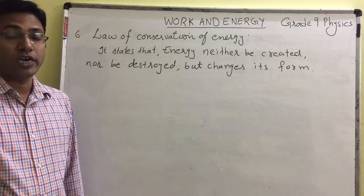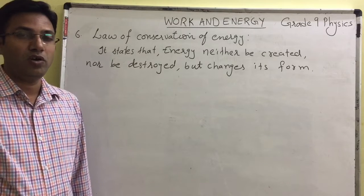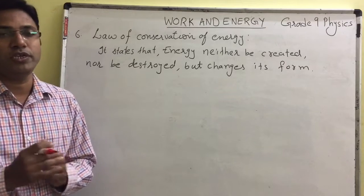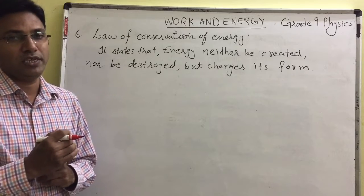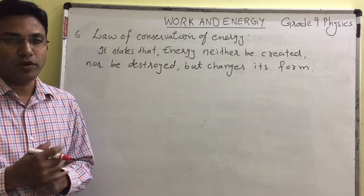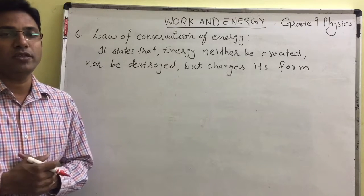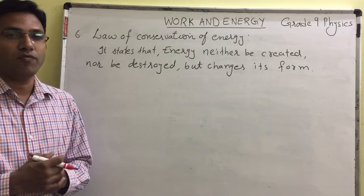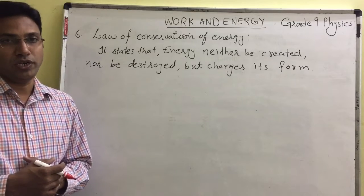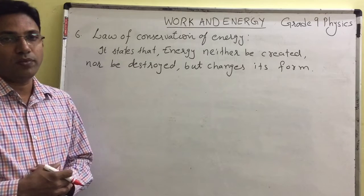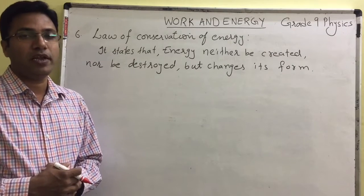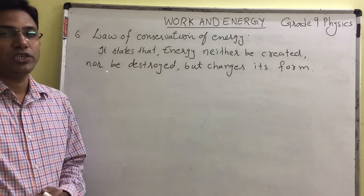Now let us see the law of conservation of energy. According to this law, energy can neither be created nor be destroyed, but it changes its form. That means in nature the total energy is constant — it only changes its form from one to another. For example, petrol has chemical energy. When we use petroleum vehicles, that chemical energy is converted into mechanical energy, heat energy, and light energy. Energy is converting from one form to another. Thus the law of conservation of energy states: energy can neither be created nor destroyed; it only changes its form.